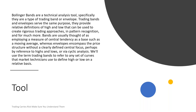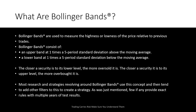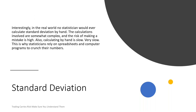Bollinger Bands are a technical analysis tool — specifically, they are a type of trading band or envelope. Bands are used because they measure central tendency based on a base of some sort, and in this case the base is a moving average. The first thing we do with Bollinger Bands is come up with a moving average, and then we apply two times standard deviation.